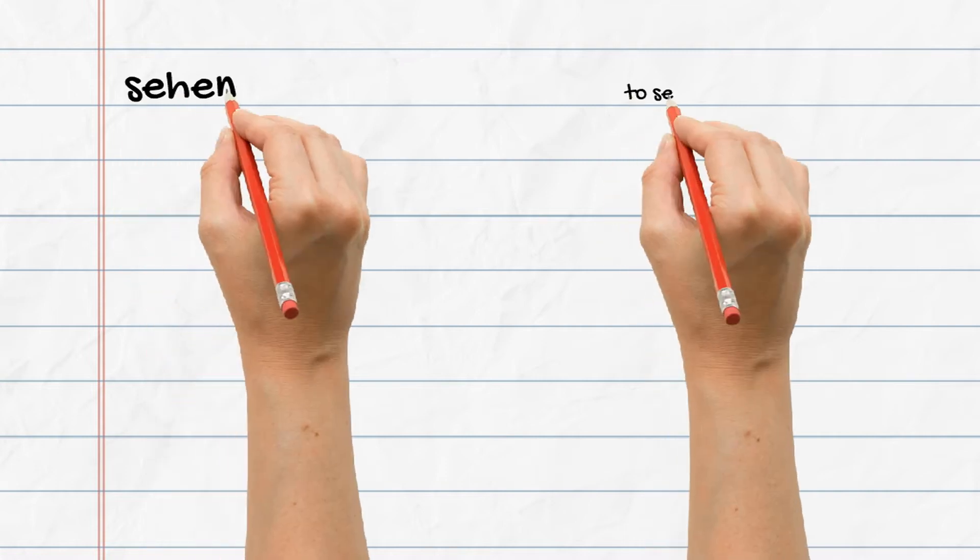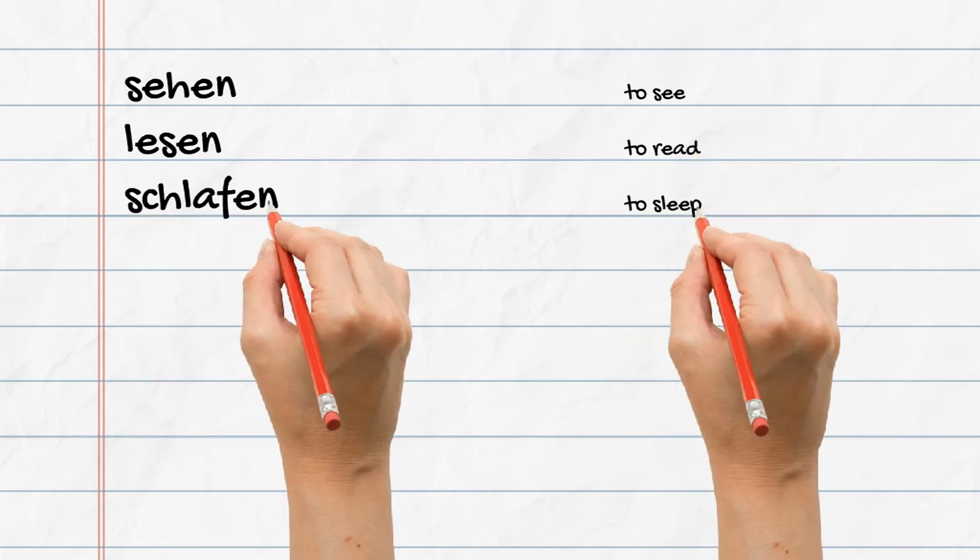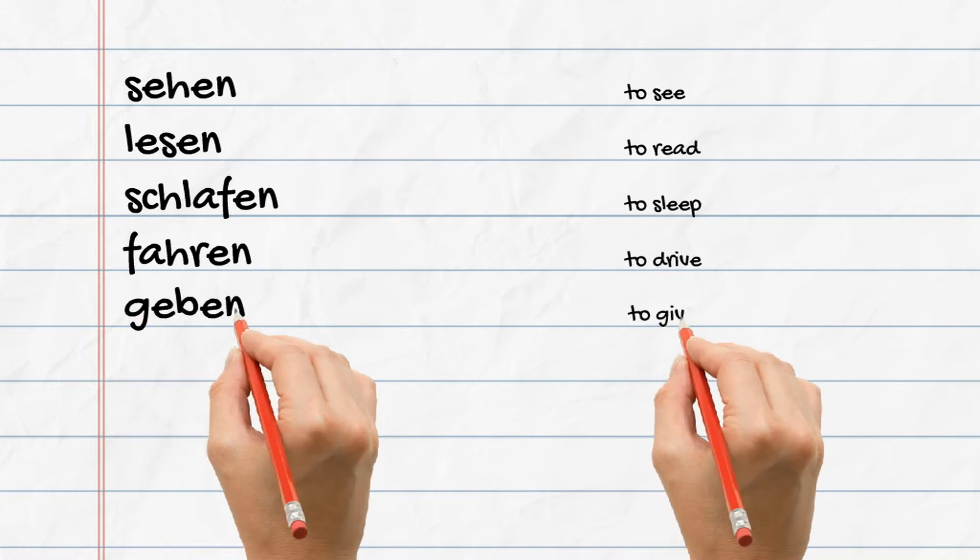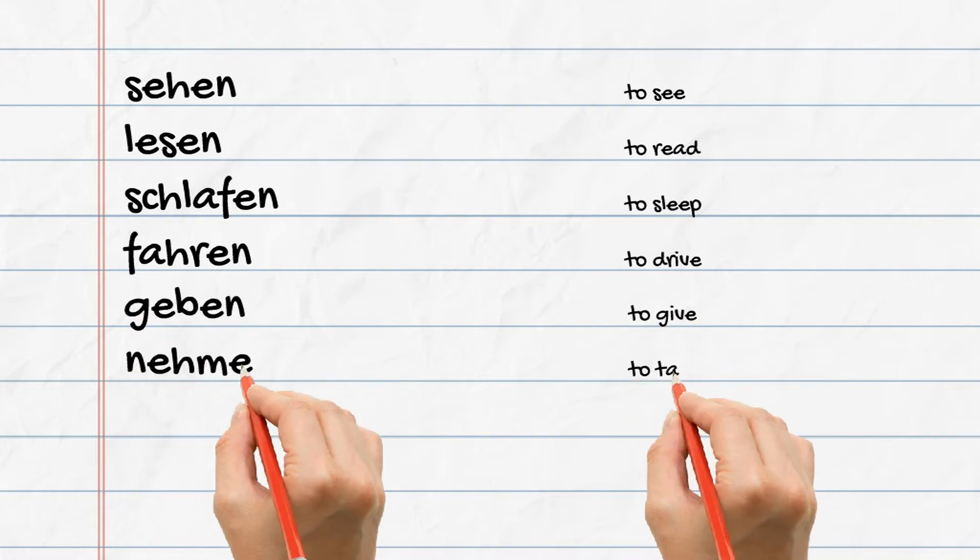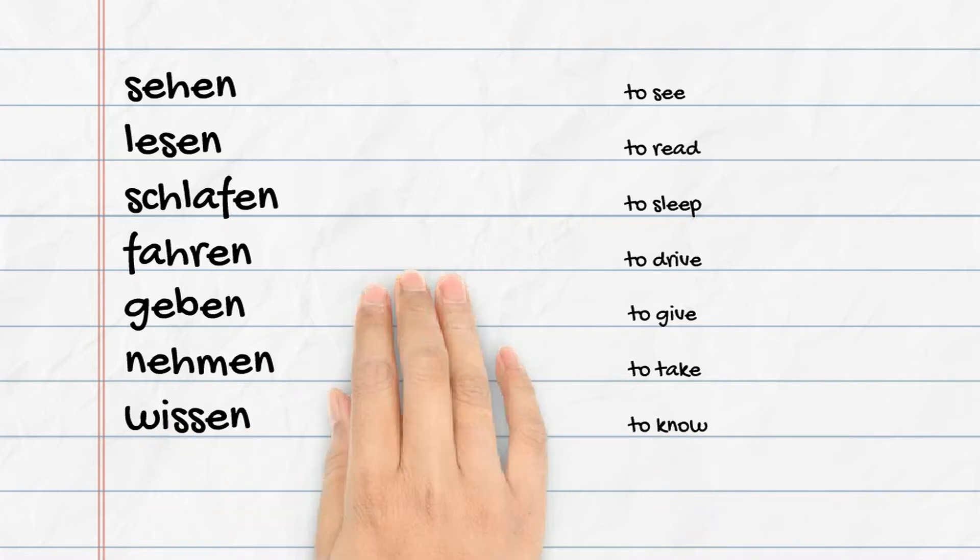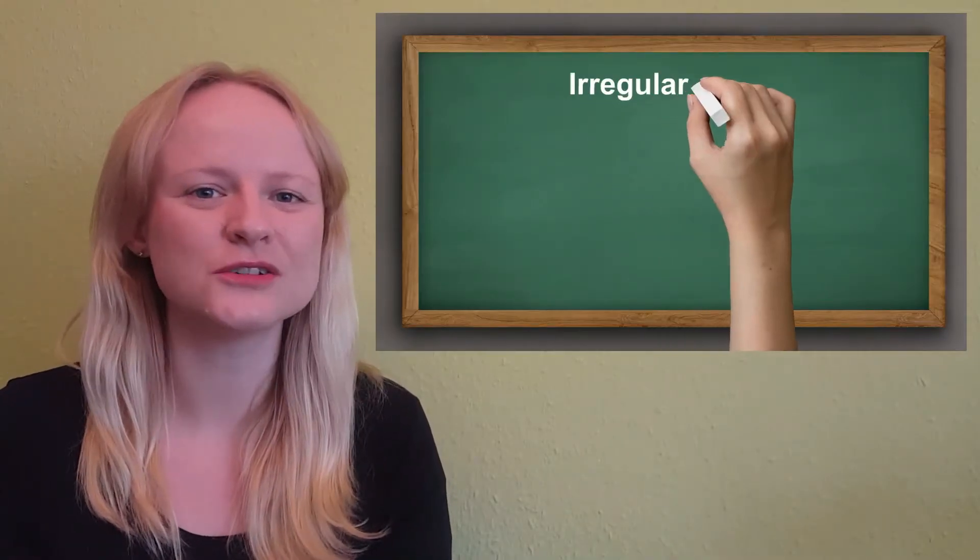In total I have seven new words for you today, all of which are irregular. So these are sehen, lesen, schlafen, fahren, and also geben, nehmen, und wissen. All really important verbs, aren't they? Okay, so now let's learn how to actually conjugate them.